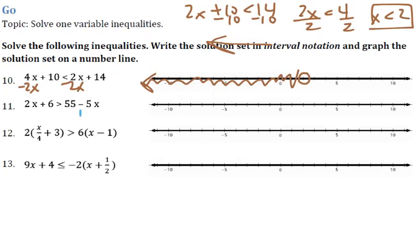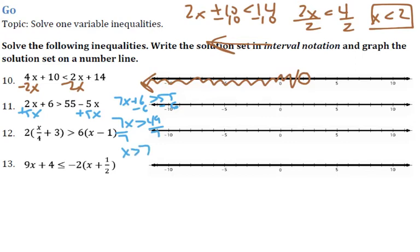Next one: add 5x to both sides, giving 7x + 6 > 55. Subtract 6 from both sides and get 7x > 49. Divide by 7, and x > 7. No equal to, so it's 7 with a hollow circle. x is bigger, so bigger means to the right - we shade to the right.